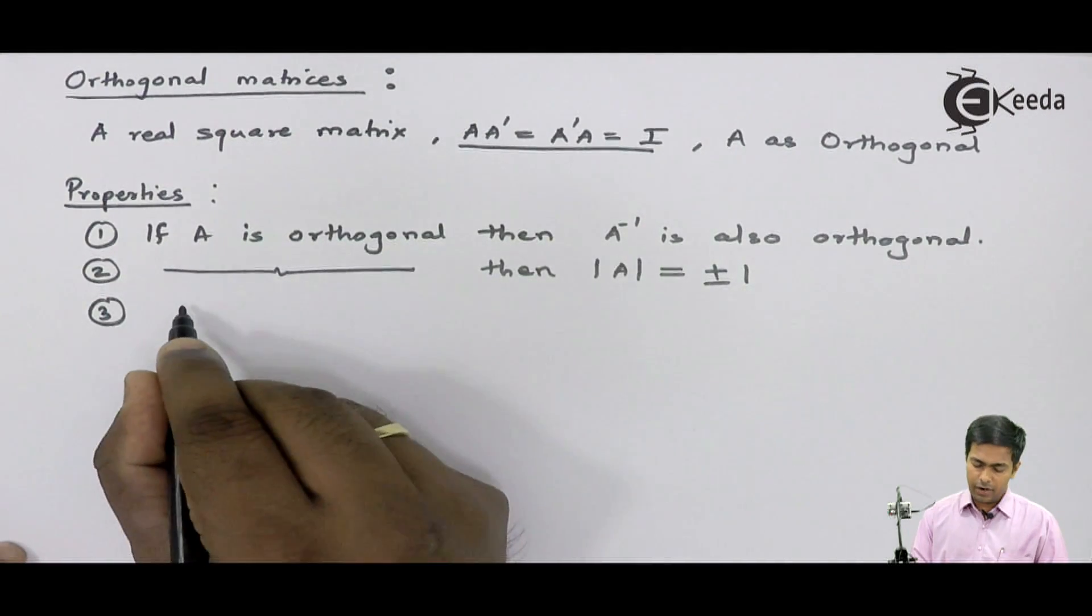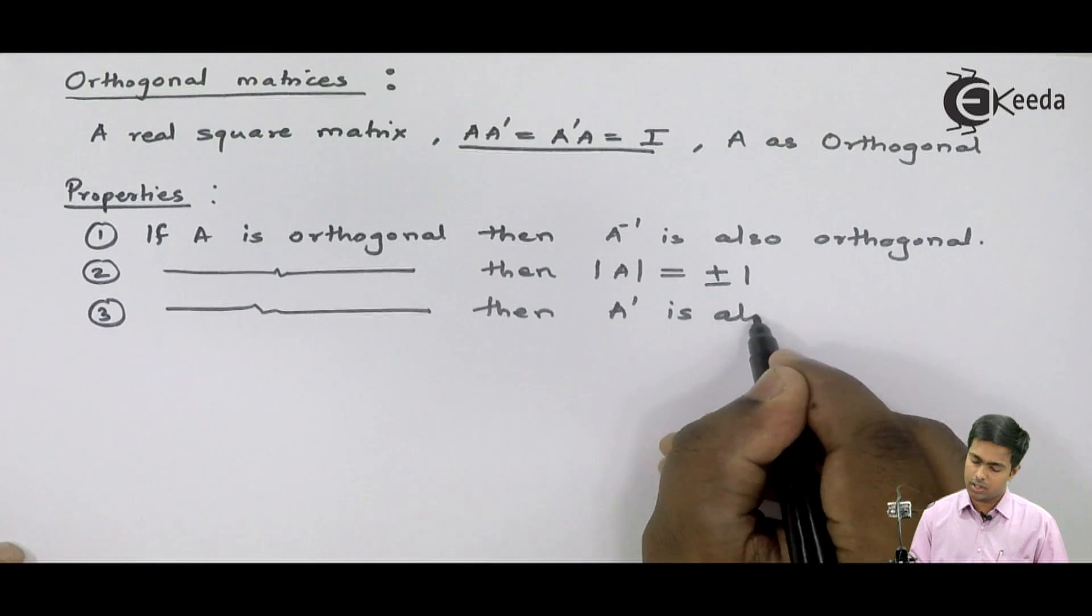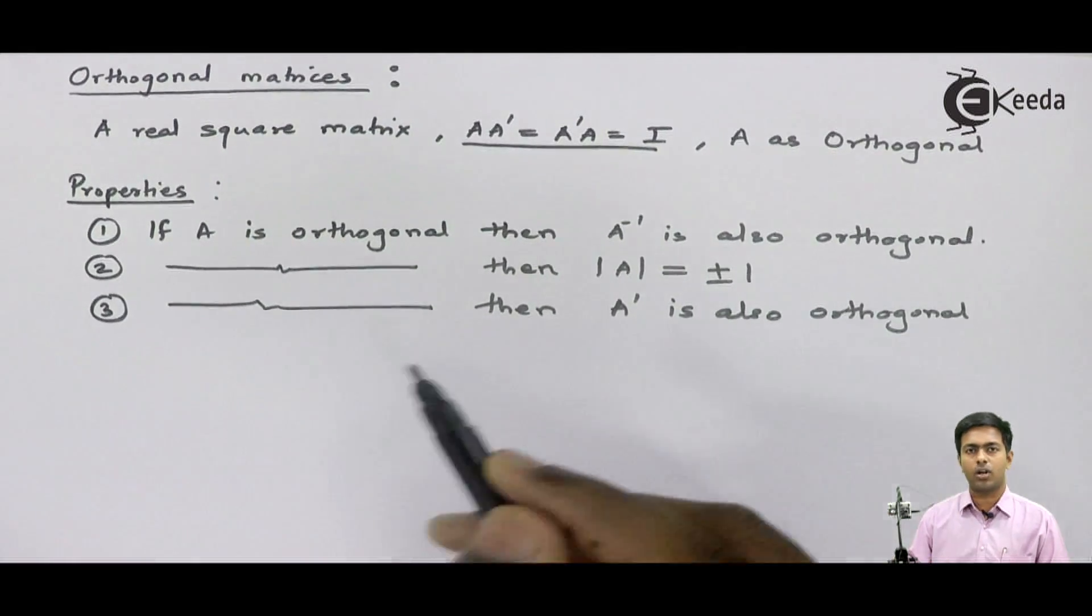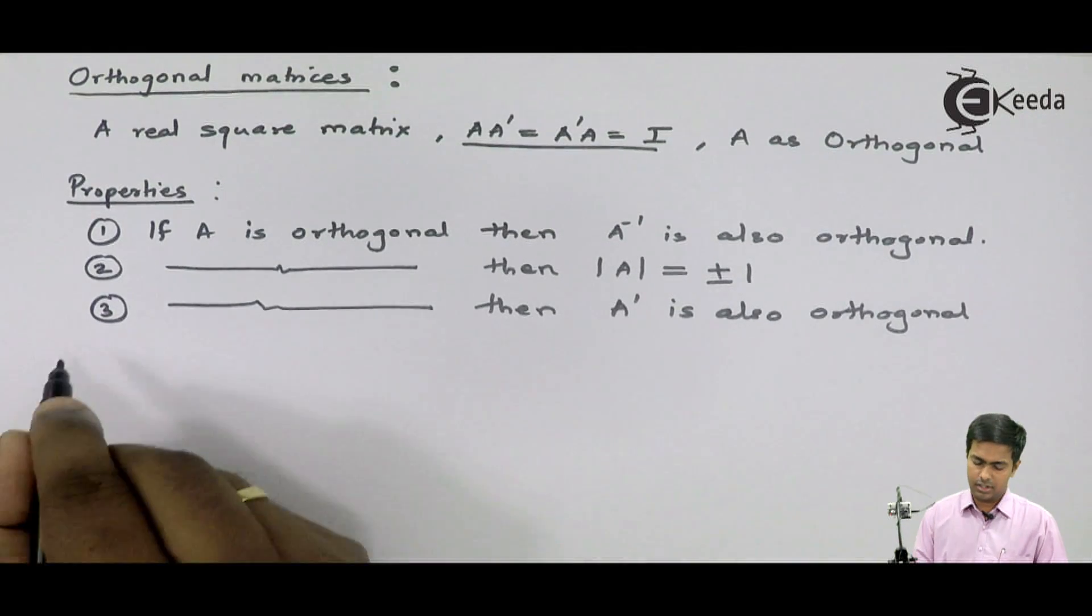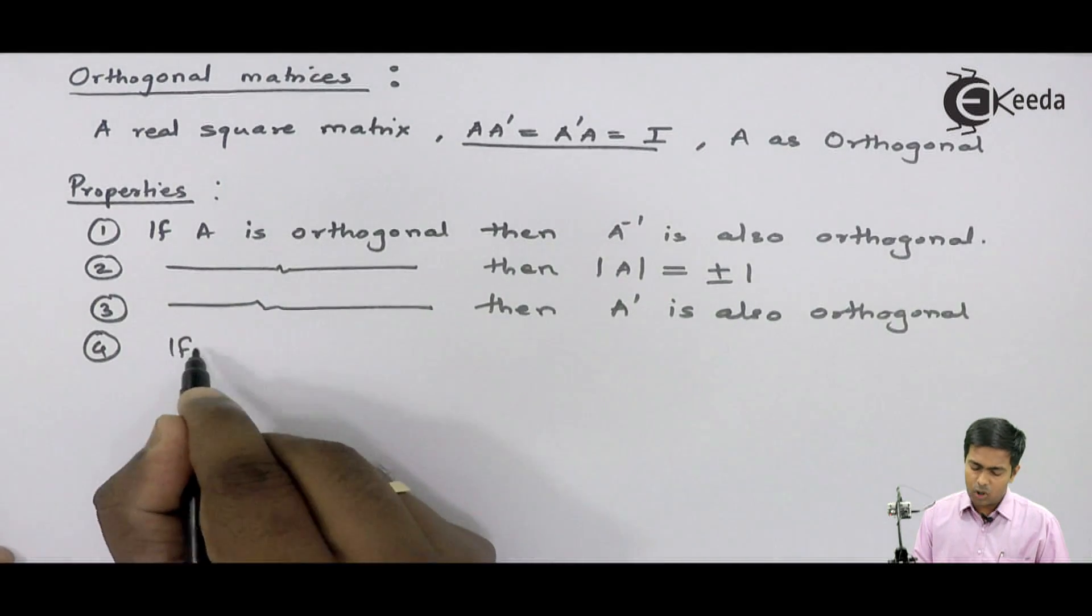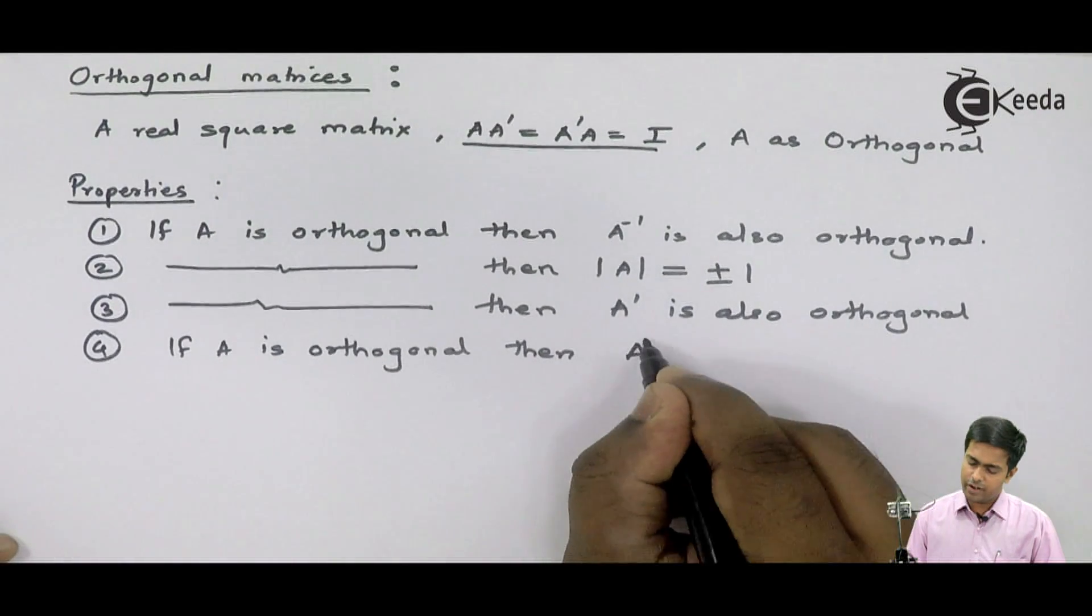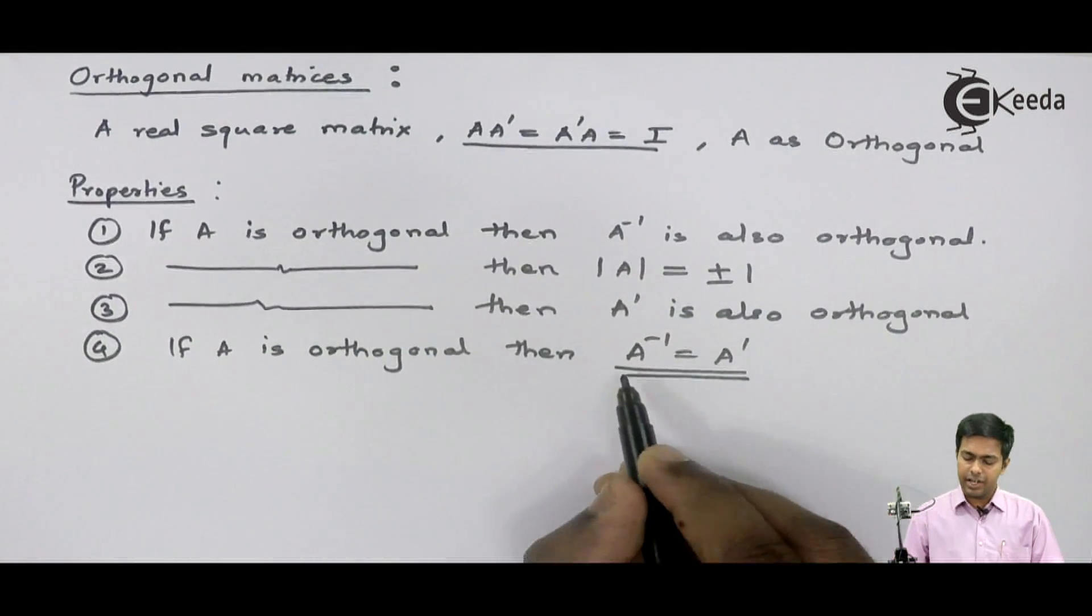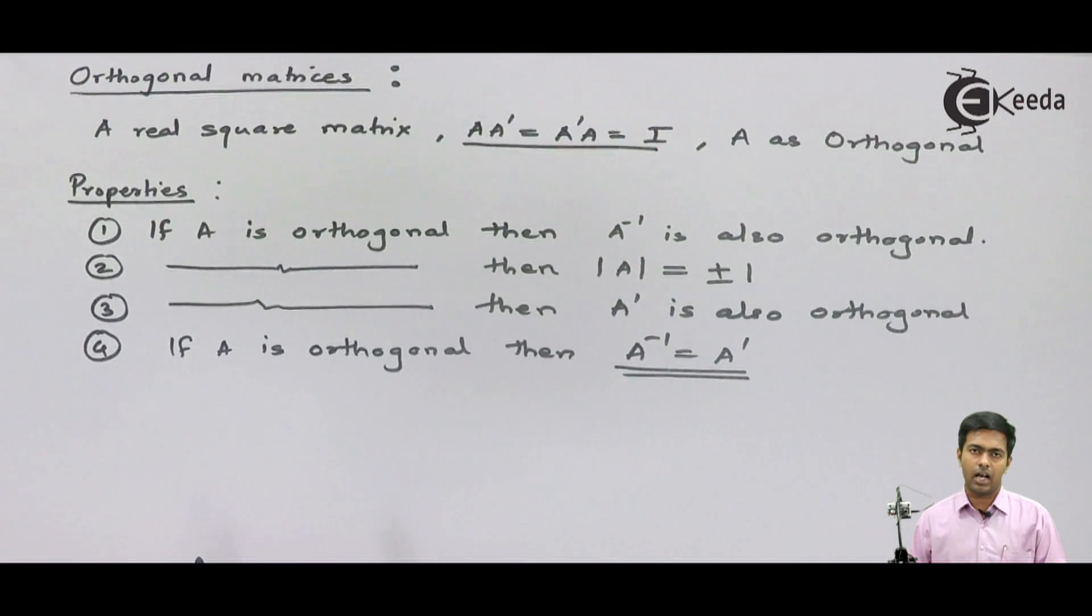The third property: if A is orthogonal matrix, then A dash is also orthogonal. If you will try to find out the transpose of the orthogonal matrix, then you will find that it is also orthogonal. The next and the most important property is if A is orthogonal, then the value of A inverse is equal to A dash. It means the inverse of orthogonal matrix and the transpose of orthogonal matrix are equal.